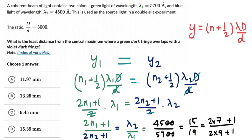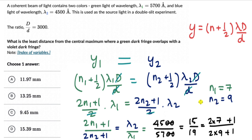We can write 15 as 2×7 + 1 and 19 as 2×9 + 1. Comparing with the left-hand side (2n1 + 1)/(2n2 + 1), we get n1 = 7 and n2 = 9. So the overlap closest to the central maximum — the least distance — happens when the 7th green dark fringe overlaps with the 9th violet dark fringe.